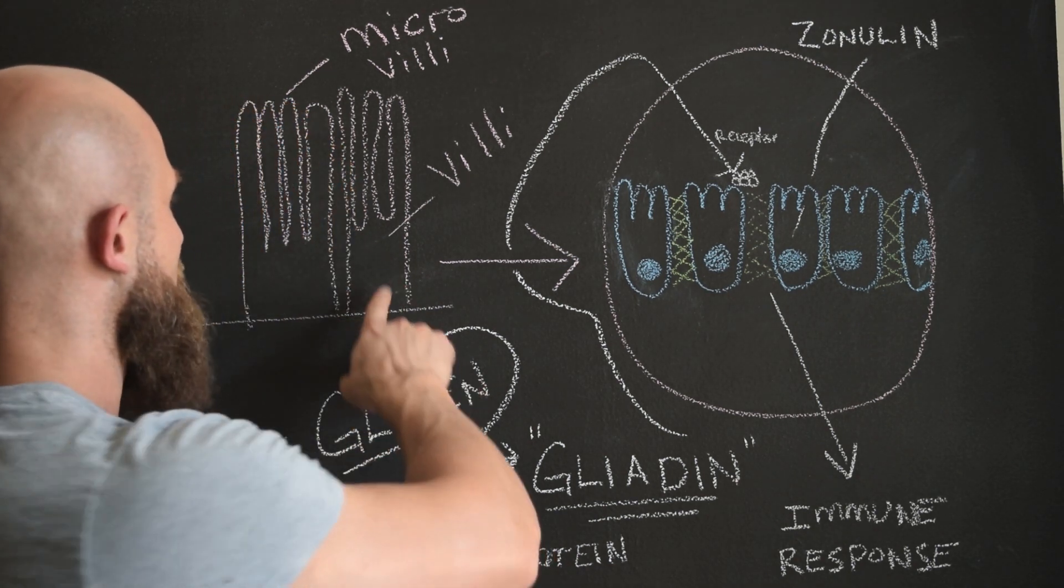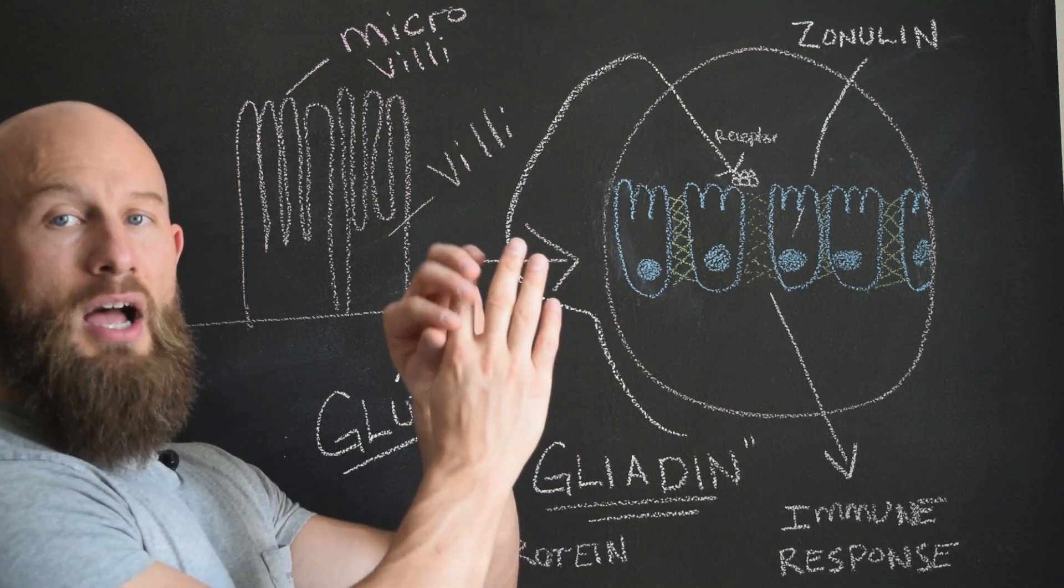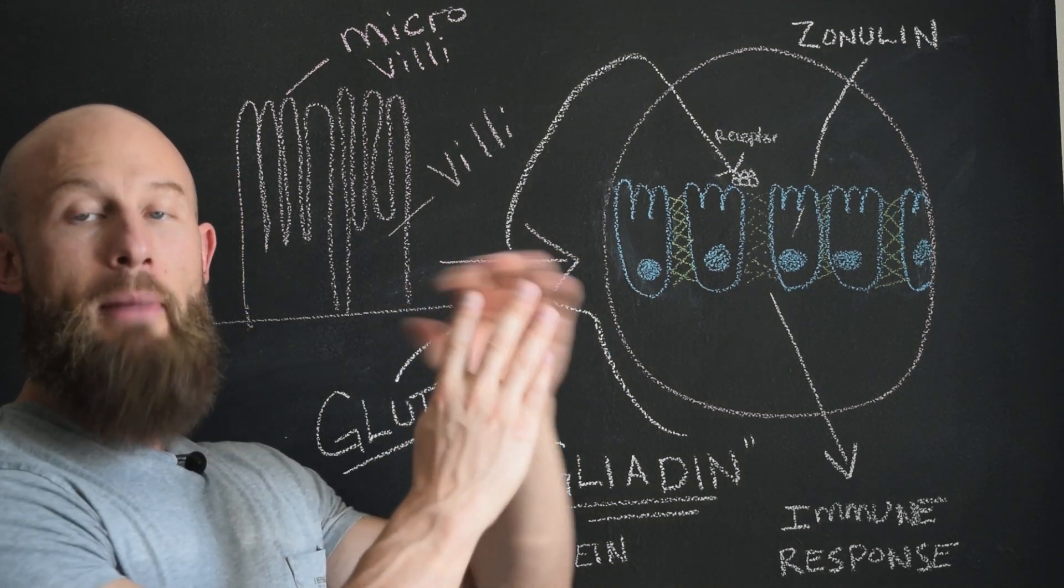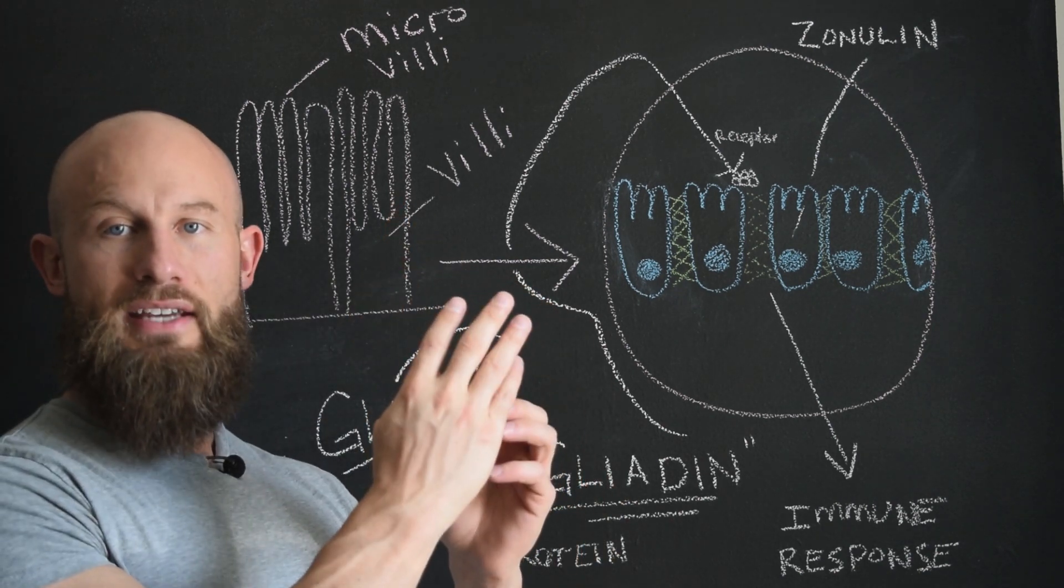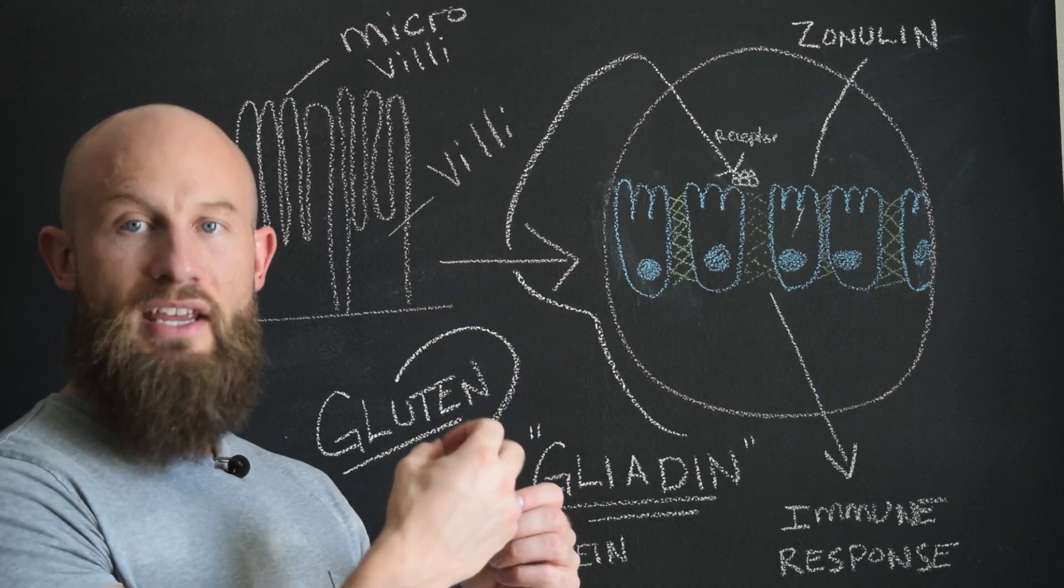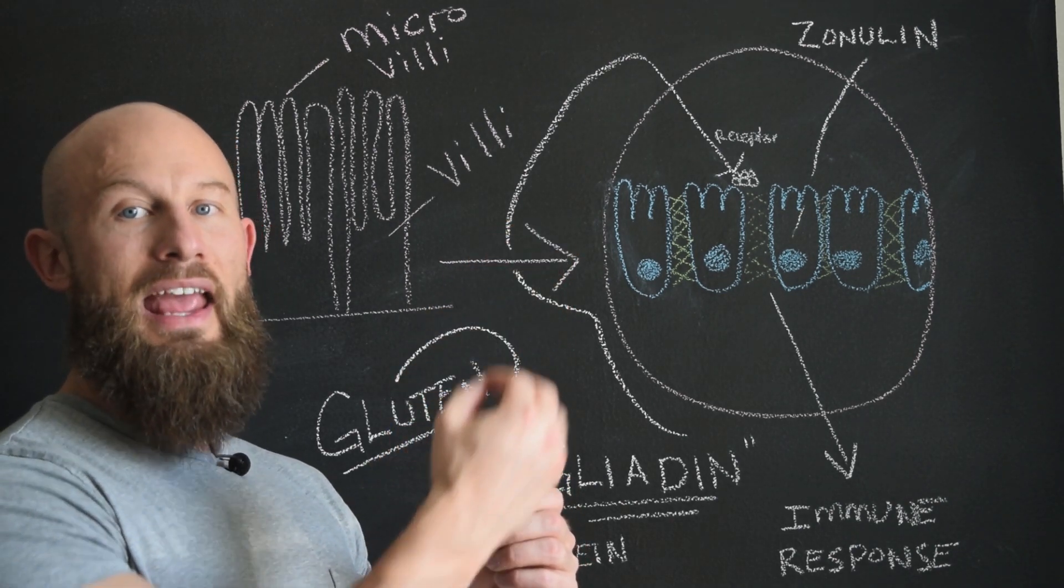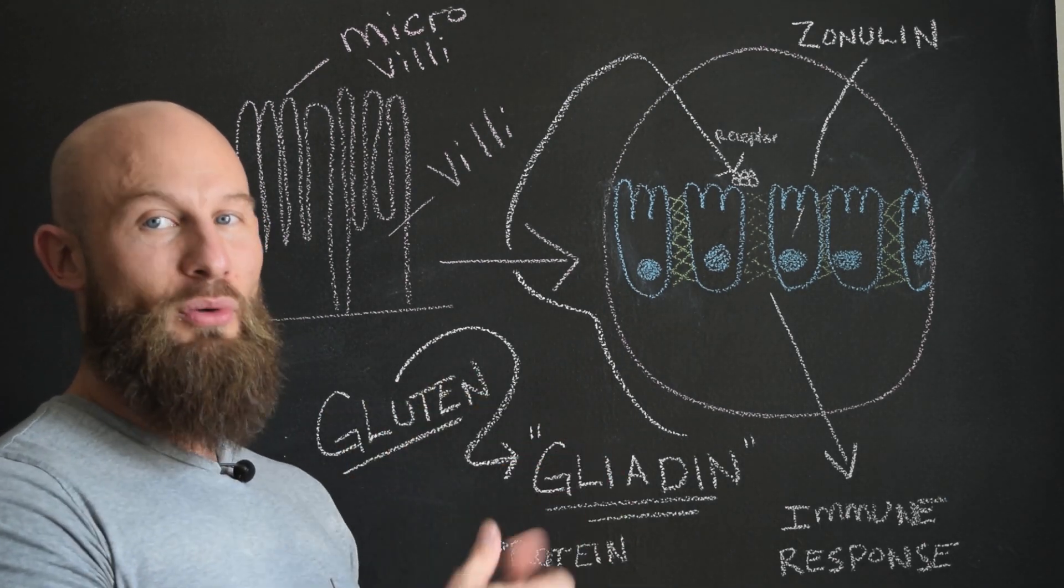The intestine is lined with these villi. They're almost like finger-like protrusions. And on top of the villi, if you magnify it, there are little microvilli. They are coated with enterocytes, kind of like bacteria. Their job is to absorb the proteins, the foods we've consumed, and obviously absorb them and then disperse them into the body for utilization.